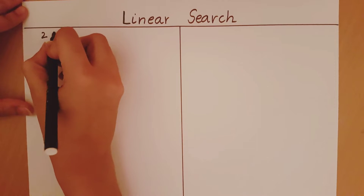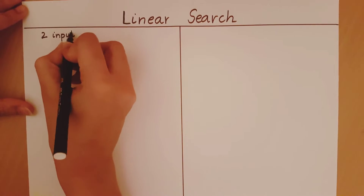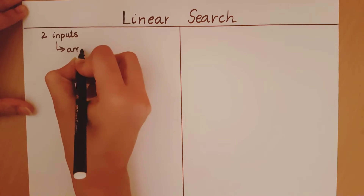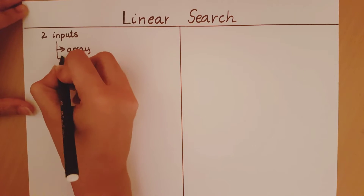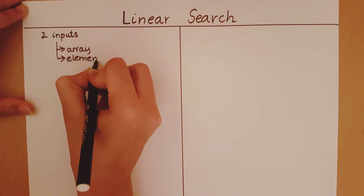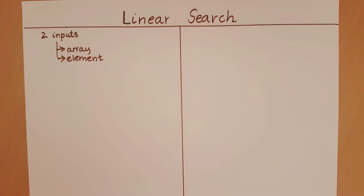It takes in two inputs: one is an array and one is an element. It checks whether the element given to the function is present as one of the elements in the array given to the function. So let's see how it goes about doing this.